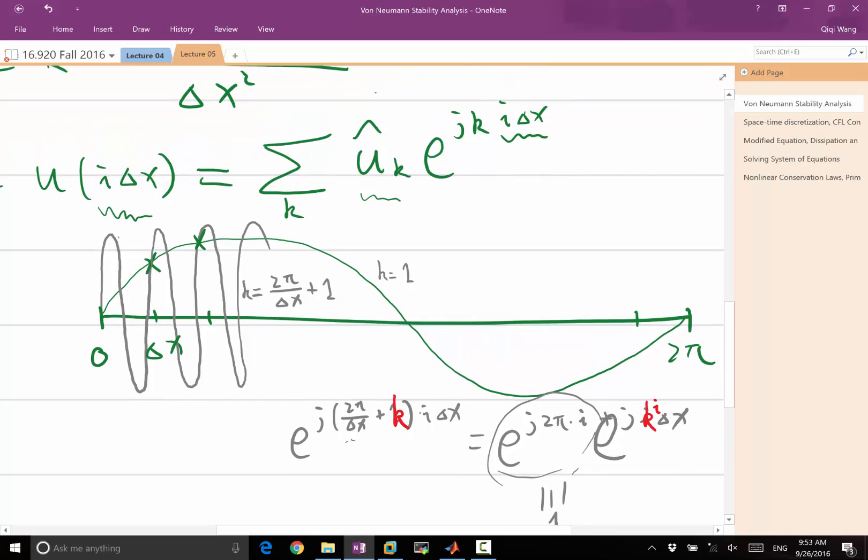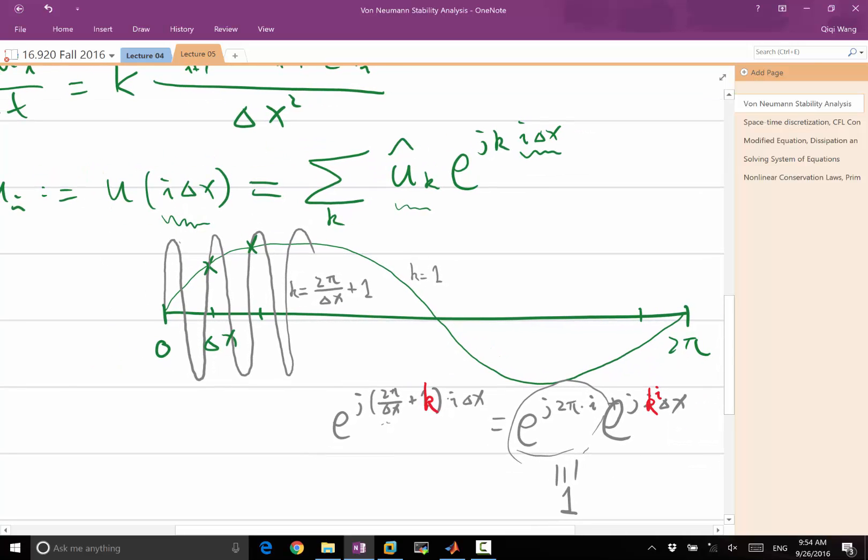Therefore, when I expand a discrete function in Fourier series, it only makes sense to have k go in between minus n over 2 and n over 2 minus 1, where n is equal to the number of intervals, basically 2 pi over delta x. 2 pi is the whole length of the interval, delta x is the length of each interval, so n is the number of intervals over the domain.